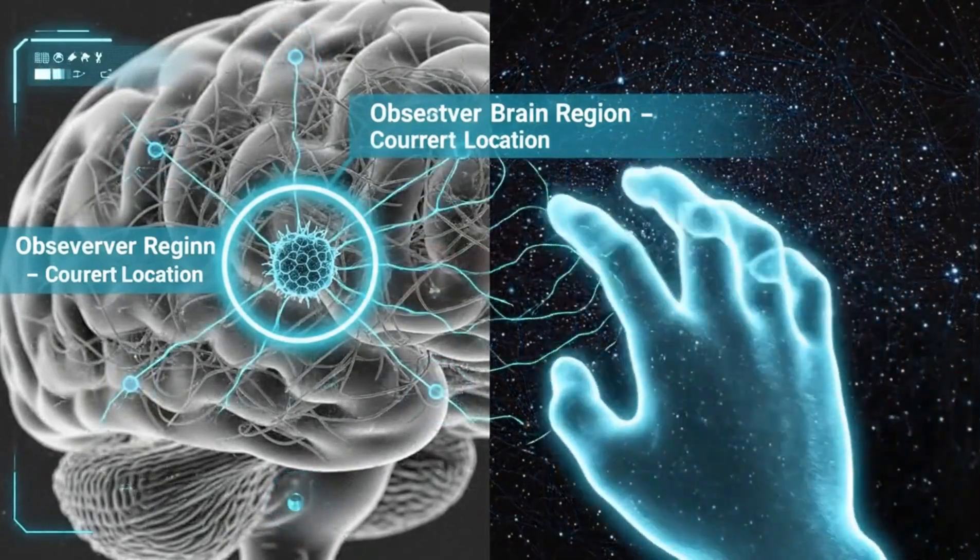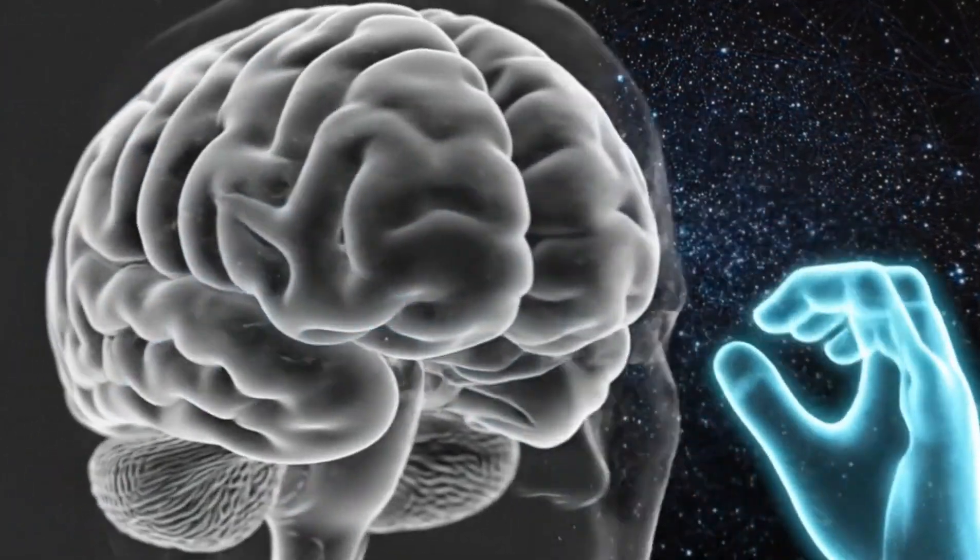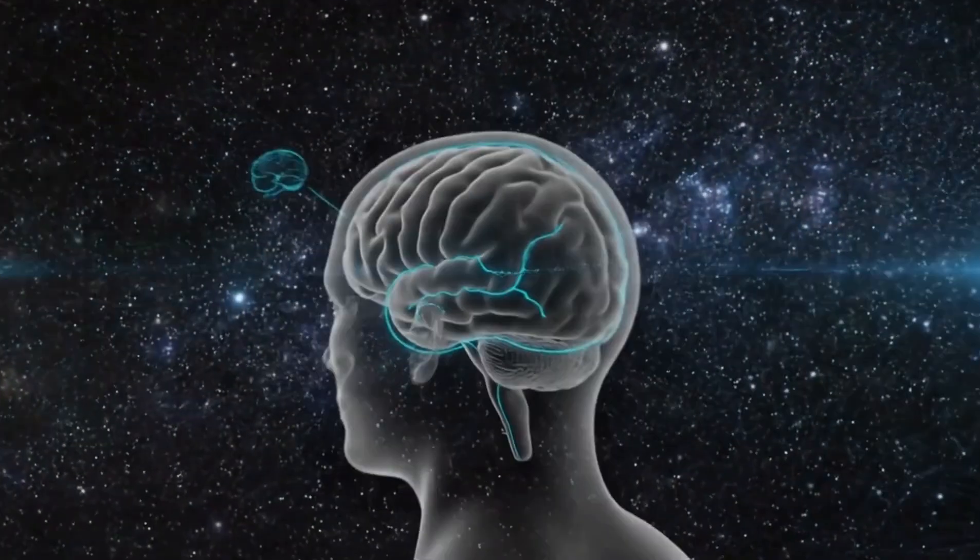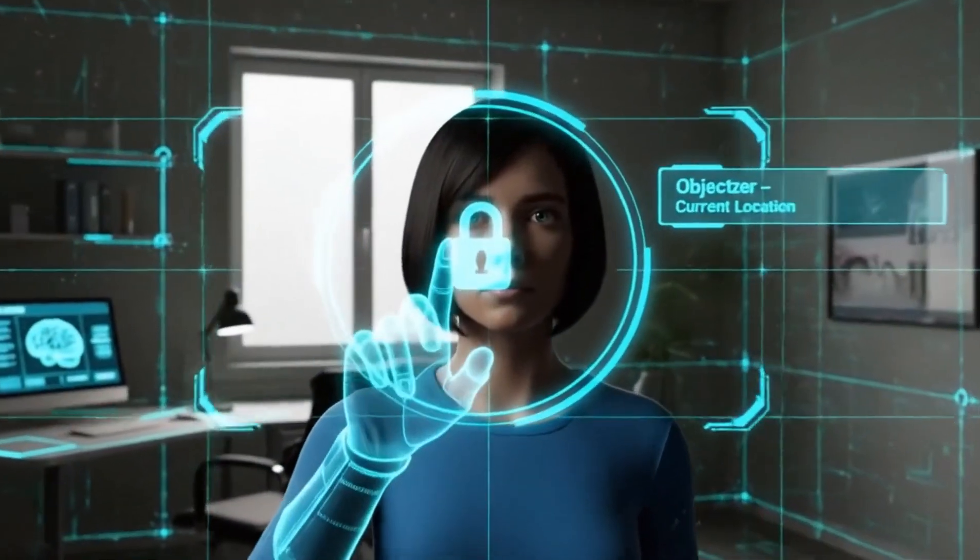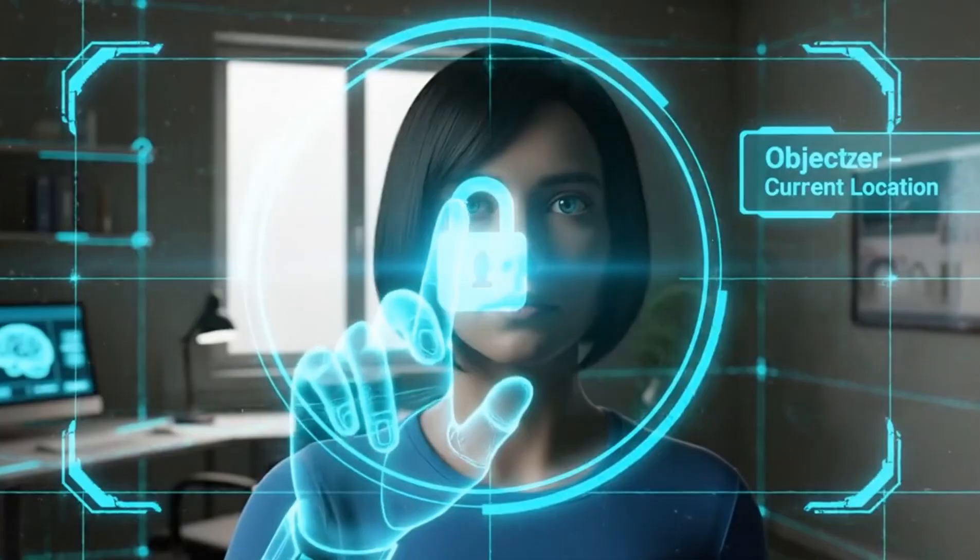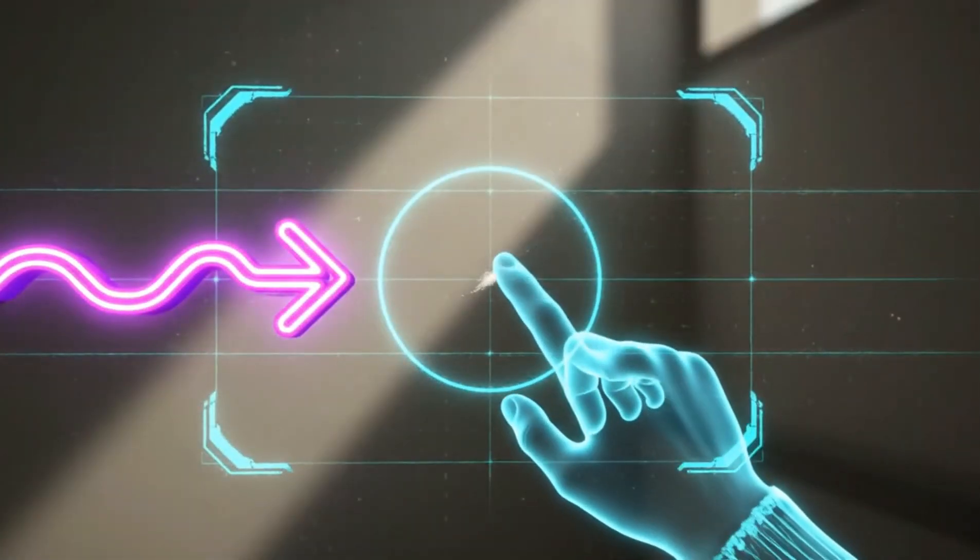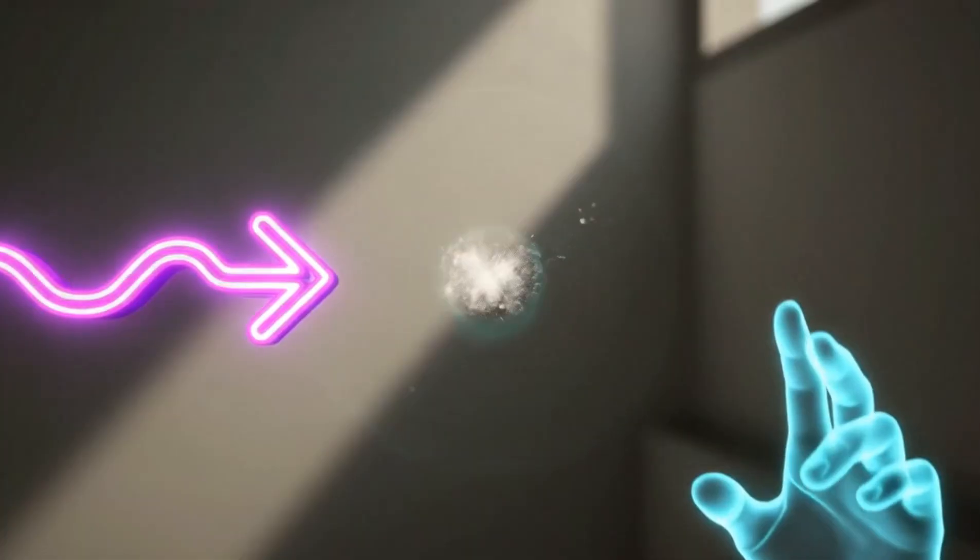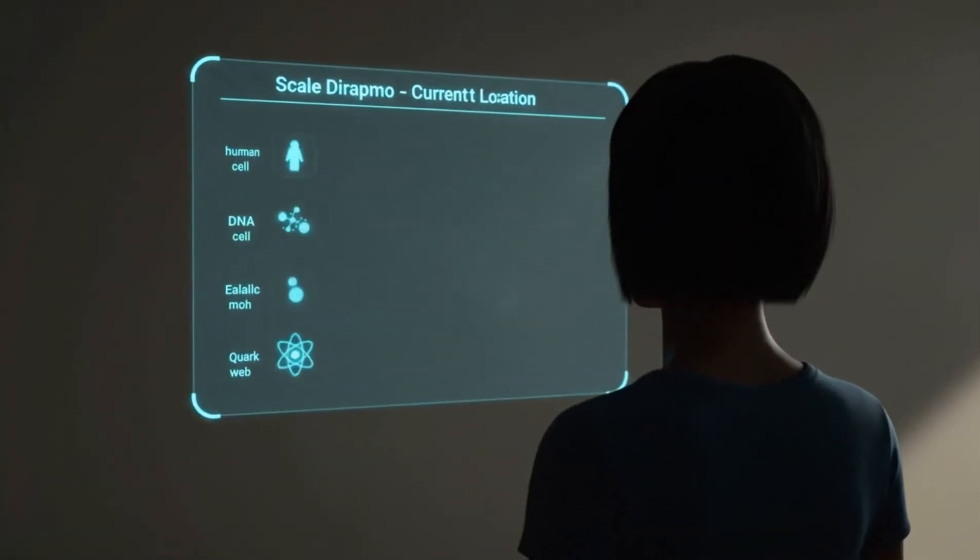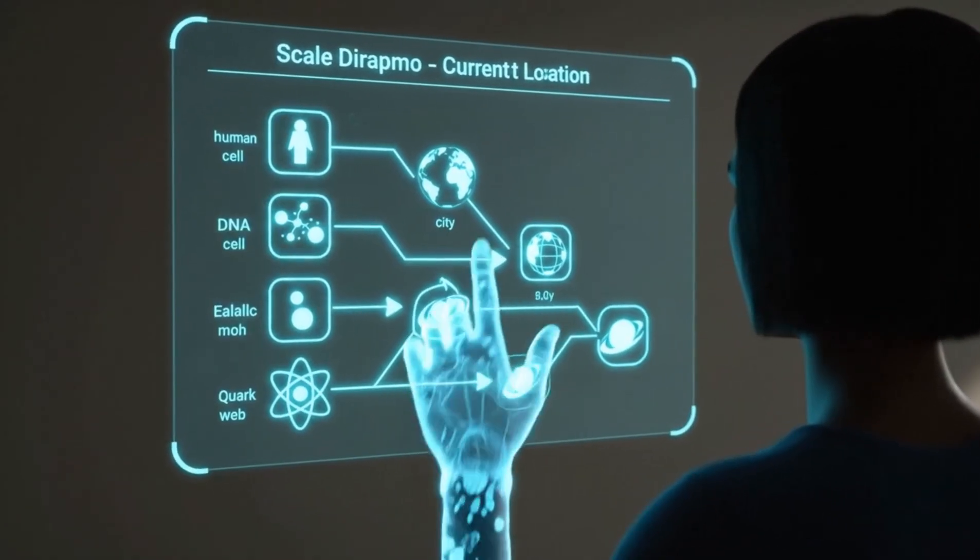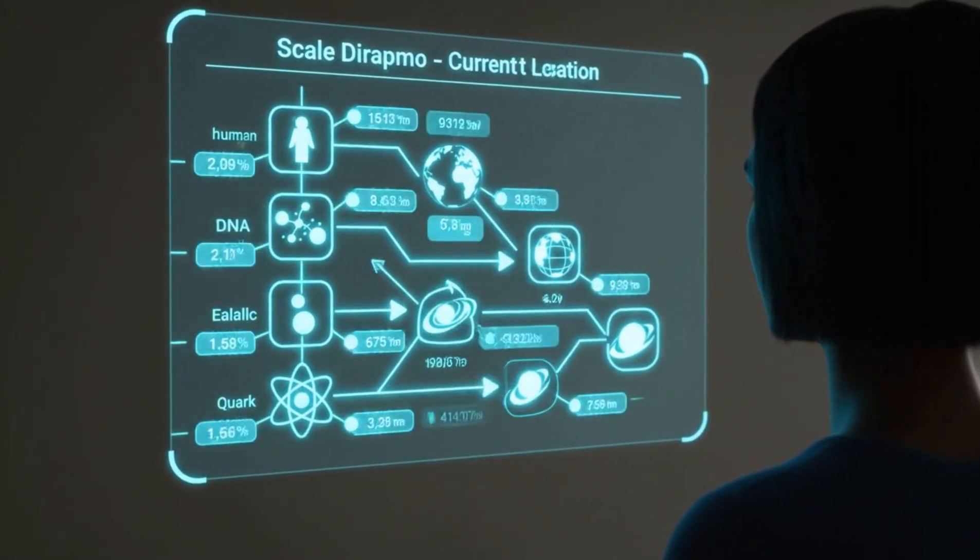Target. Observer locus isolated. Linking awareness to all previously explored scales. Single observer confirmed. All scales converge within one conscious frame of reference. System check. Confirmation target. All mapped levels aligned from quark to cosmic web. Each scale remissioned in it.